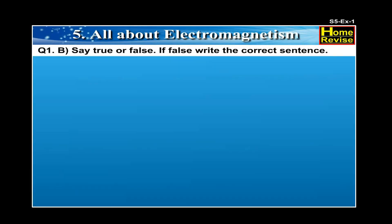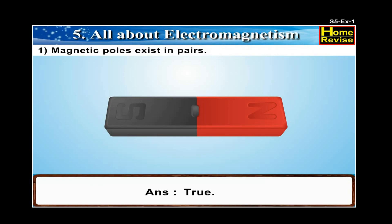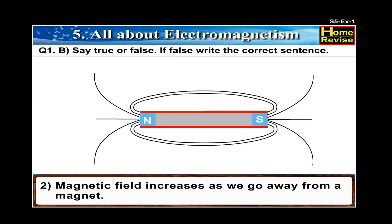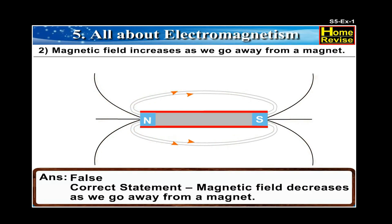Question 1B. Say true or false. If false, write the correct sentence. 1. Magnetic pole exists in pairs. 2. Magnetic field increases as we go away from a magnet. The answer is False. The correct statement is: Magnetic field decreases as we go away from a magnet.